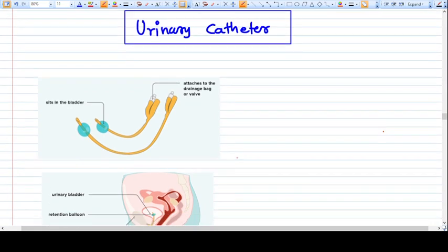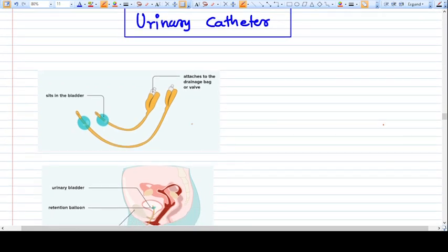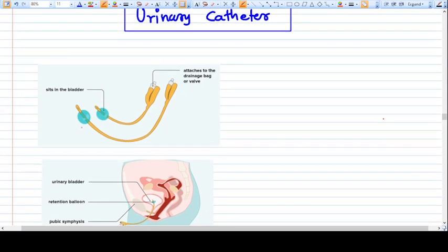Hello everyone, in this video we're going to talk about urinary catheters in depth. You've all seen urinary catheters - they look like this. The most common catheters we use are Foley catheters, which are tubular devices made up of rubber with an inflatable balloon at one end.